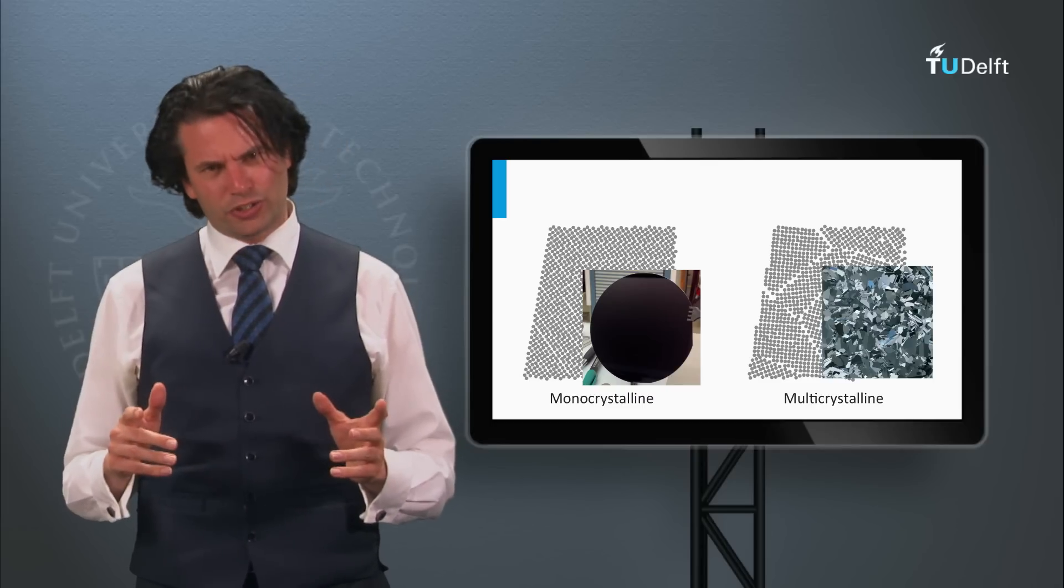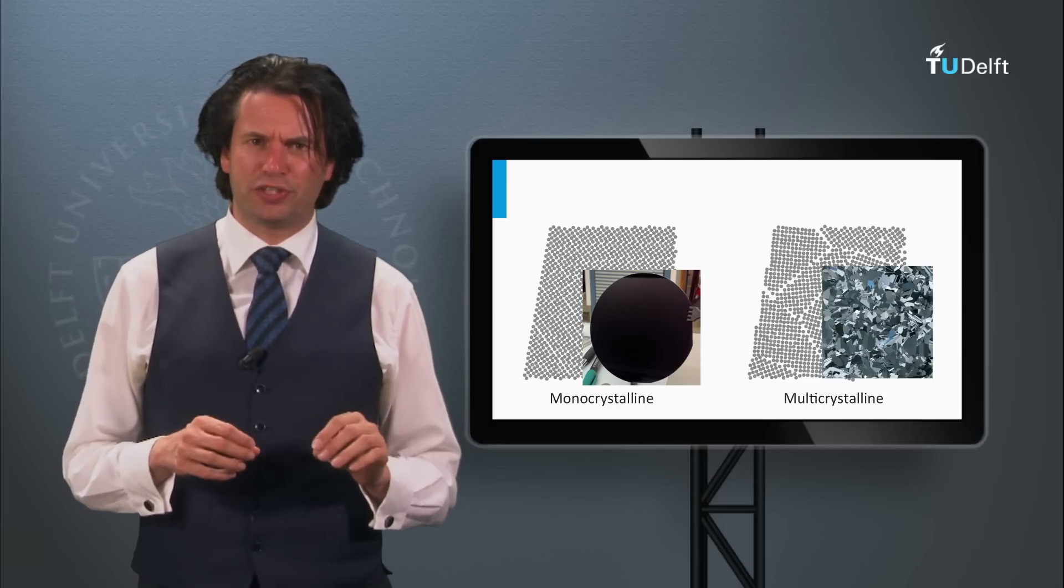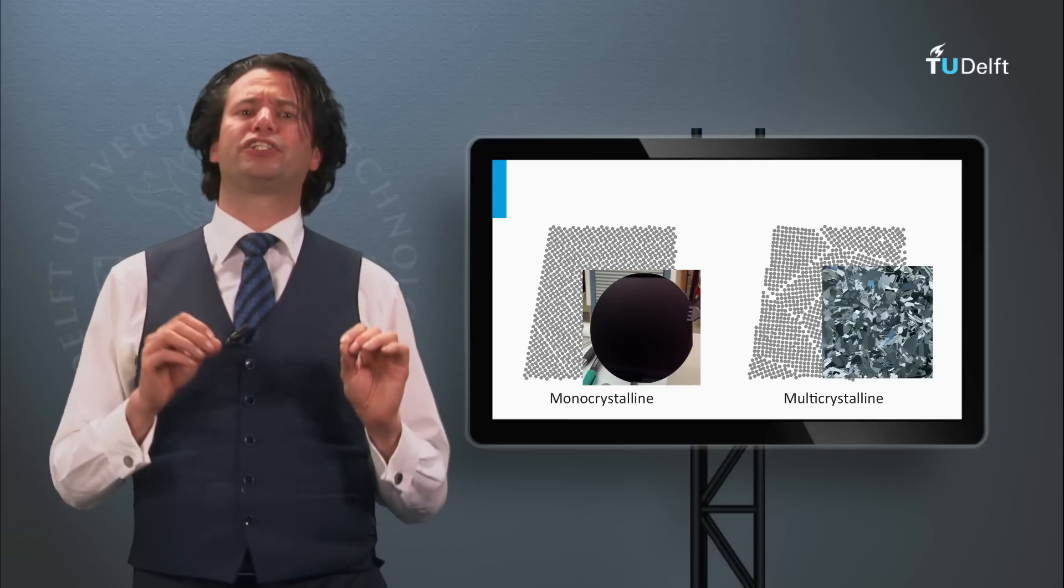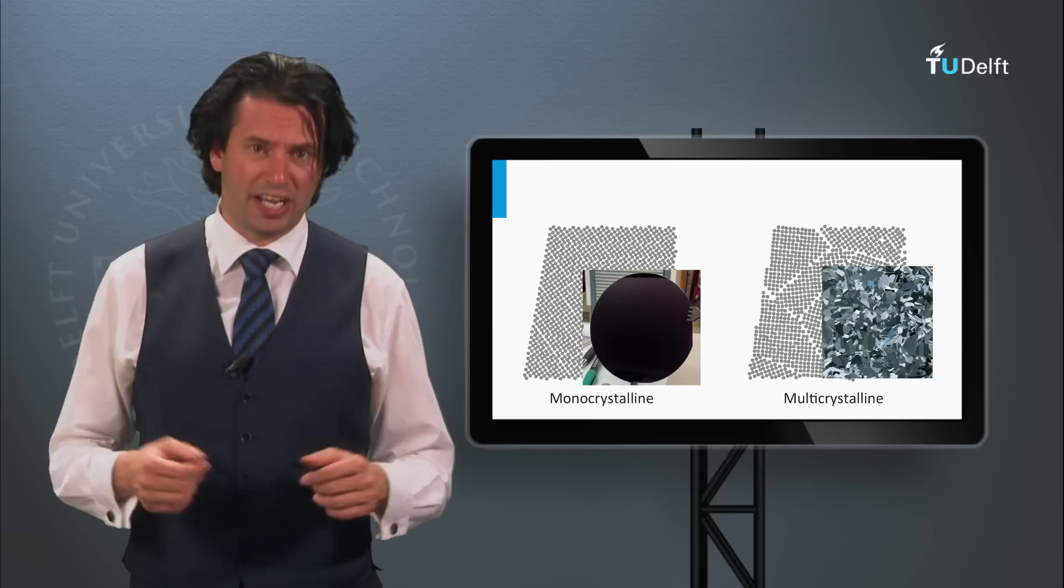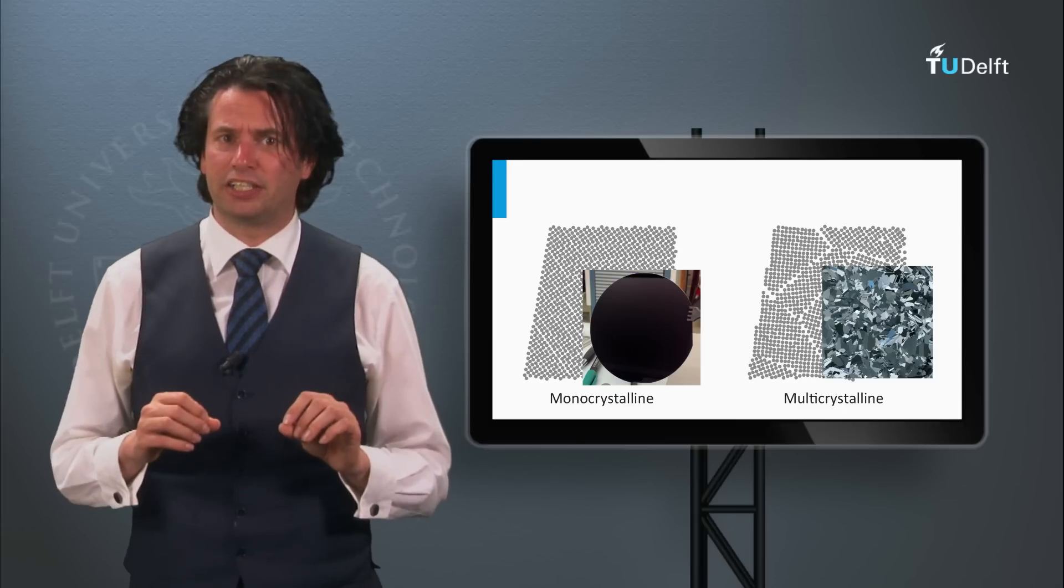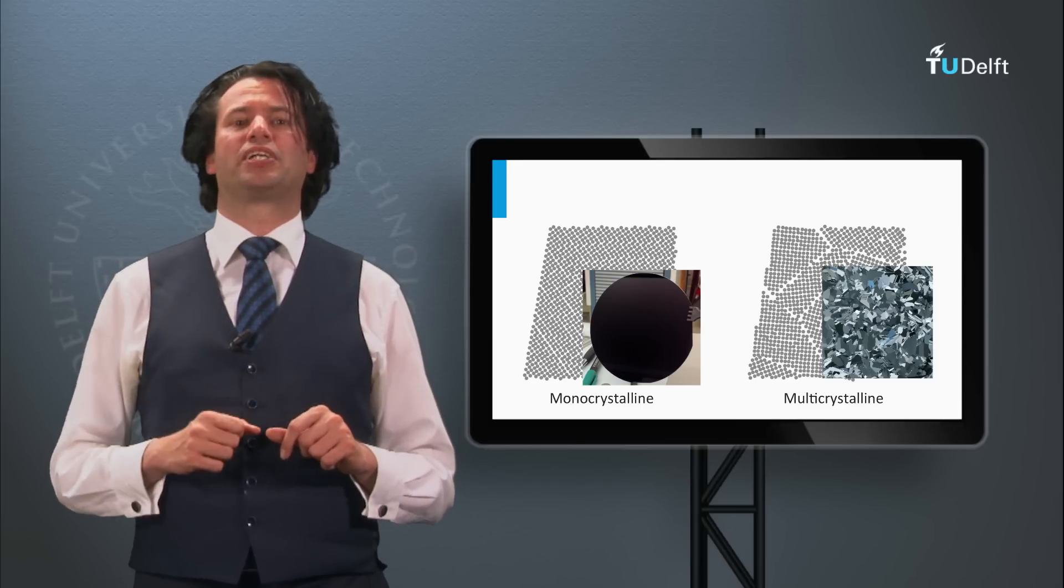As discussed earlier this week, we have various types of wafers with different qualities of silicon. To achieve the highest efficiencies, the bulk recombination must be as low as possible. Therefore, the high efficiency crystalline silicon solar cells are based on monocrystalline wafers.